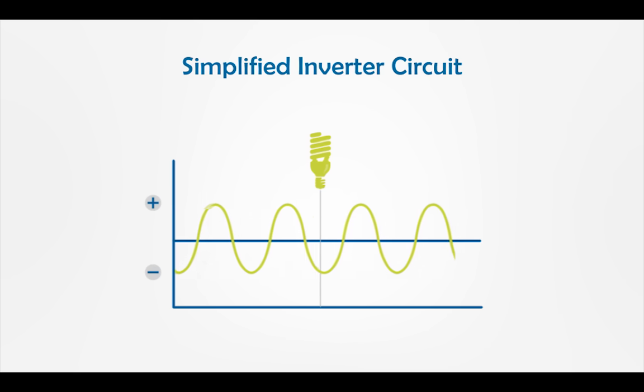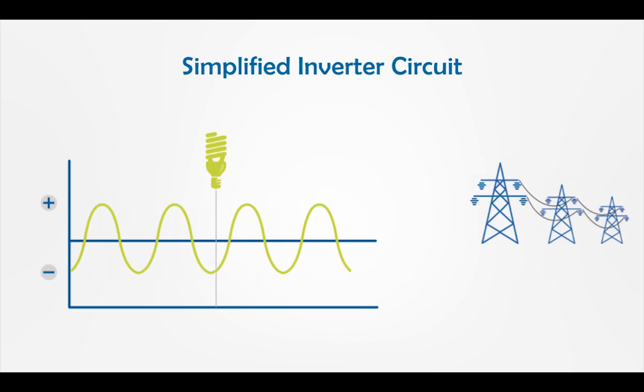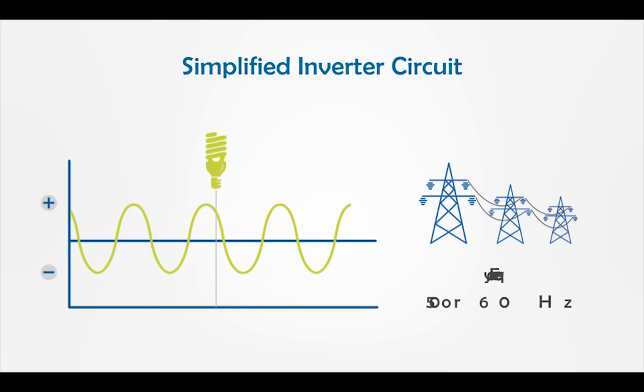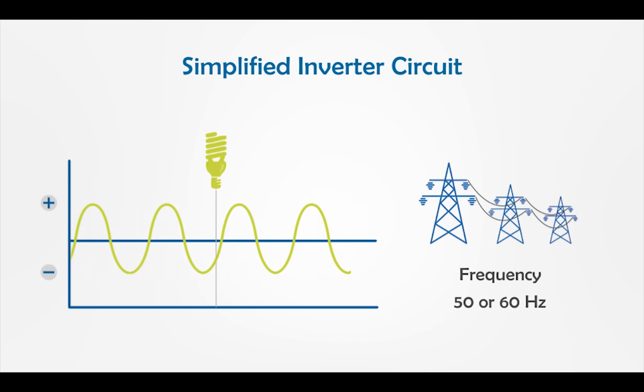In other words, we need a smooth current. The electricity provided by the power grid is sine wave with the frequency of 50 or 60 Hertz. This means that the current direction is reversed 50 or 60 times in a second.